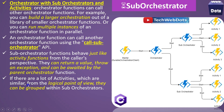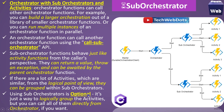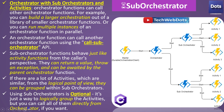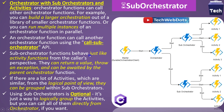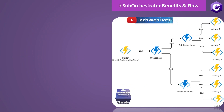So why use a sub orchestrator? The reason is: if there are a lot of activities that are similar from a logical point of view, they can be grouped within a sub orchestrator. This is a very important point. Using a sub orchestrator is optional — you can directly call all the activities from the root orchestrator — but it is a way to logically group the activities. When you want to logically group activities, sub orchestrator is a good option.